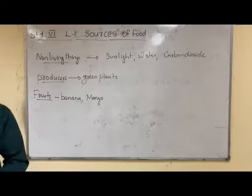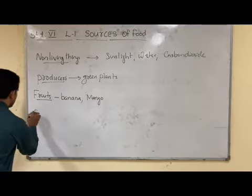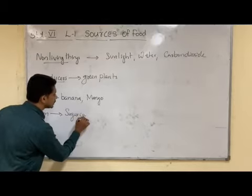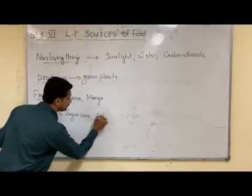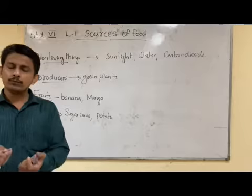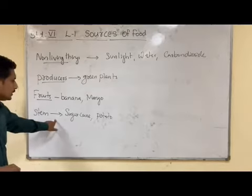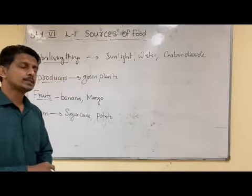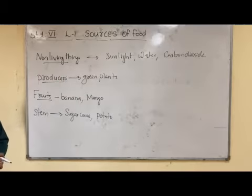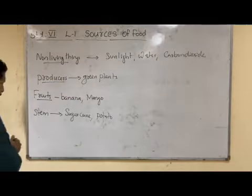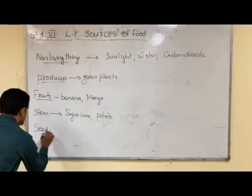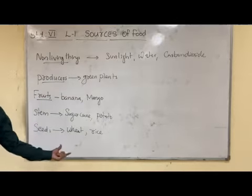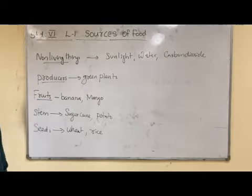In certain plants, we obtain food in the form of the stem. For example, in the case of sugarcane or potato — these are considered underground stems, so the food is preserved in their stem. In certain other plants, food is stored in their seeds. For example, wheat or rice — in all these cases, food is stored in their seeds.